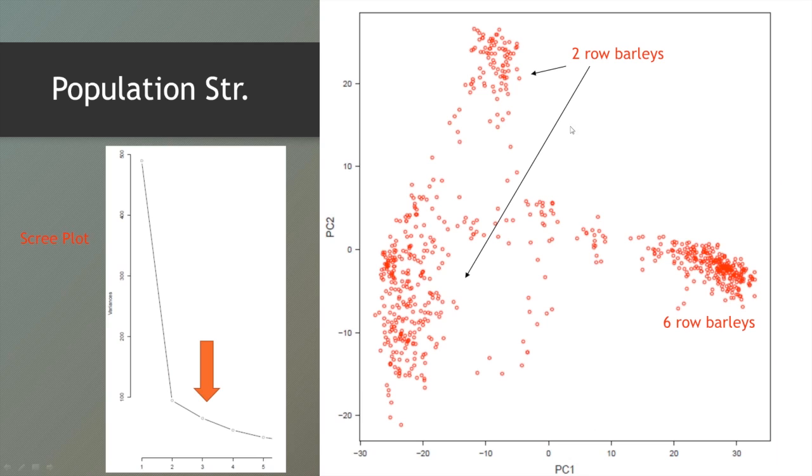Here is the PCA plot. And so in barley there's two main types, there's two row and there's six row, and that has to do with how many rows of kernels are on the head. And doing the PCA analysis, things break out into two and six row. Here's the six row germplasm.